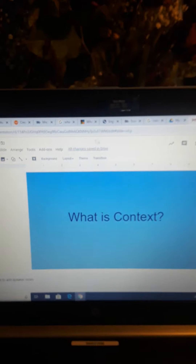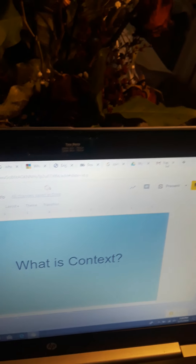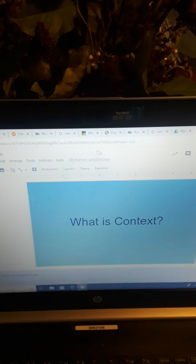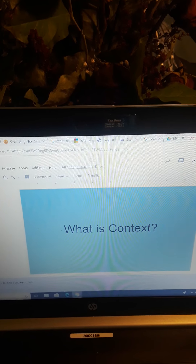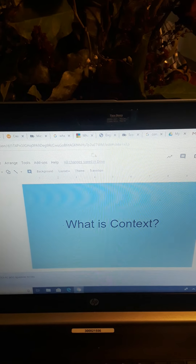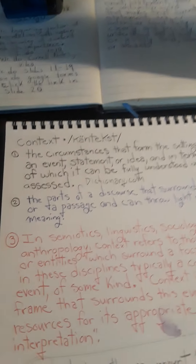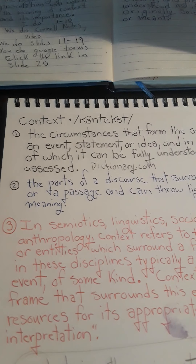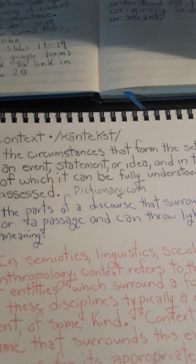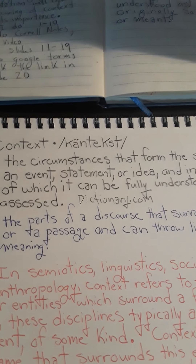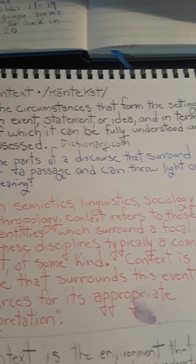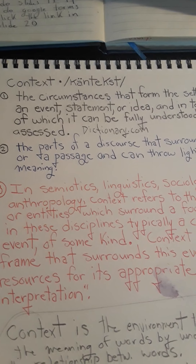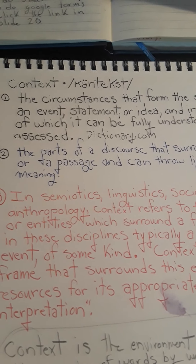We are on context again, so it's important that we also look at the definition of context and gather information. One of the great places to do that today is the Internet, using a search engine such as Google. Here on dictionary.com: the circumstances that form the setting for an event, statement, or idea, and in terms of which it can be fully understood and assessed.